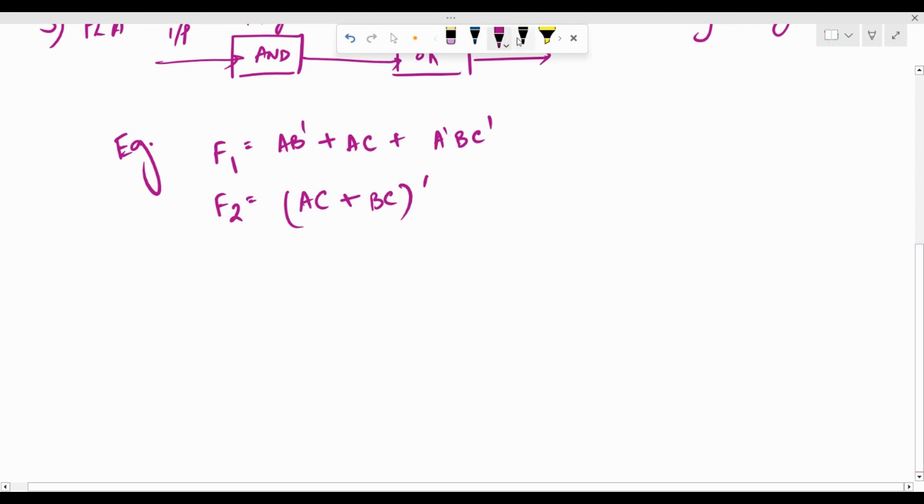The first step that we need to do is we need to develop the PLA programming table. Now how do we do that? In order to develop the PLA programming table we need to enlist all the product terms, the inputs and the outputs.